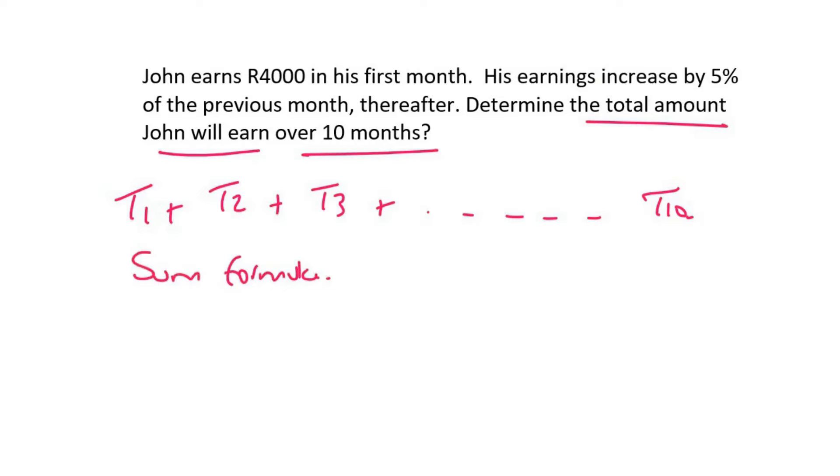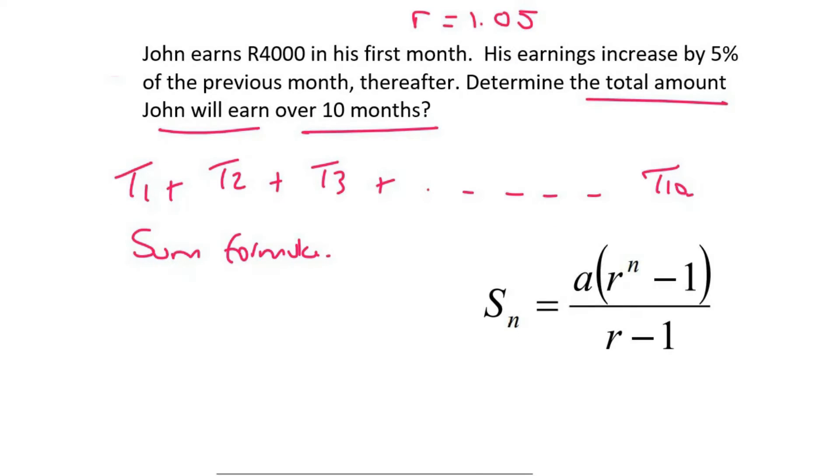We saw in question 38 that it's a geometric sequence with a ratio of 1.05. So we use the sum formula now because we're trying to find the total over 10 months. And so that's just going to give us A, which is the first term, which is 4,000. We said the ratio from question 38 was 1.05 over 10 months.